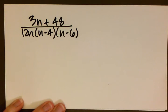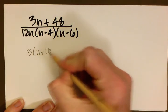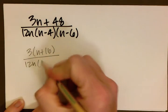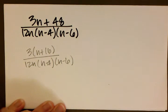So now that we look at this, we see that our numerator has something that we could factor out, and that is a 3. So if we factor a 3 out of our numerator, we get n plus 16.